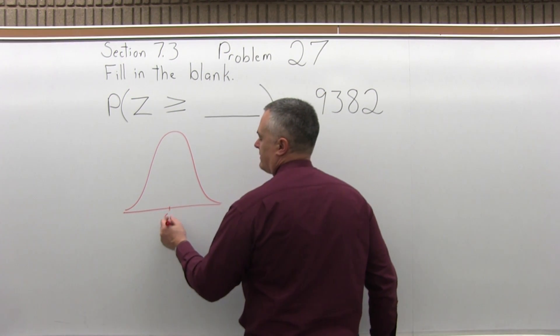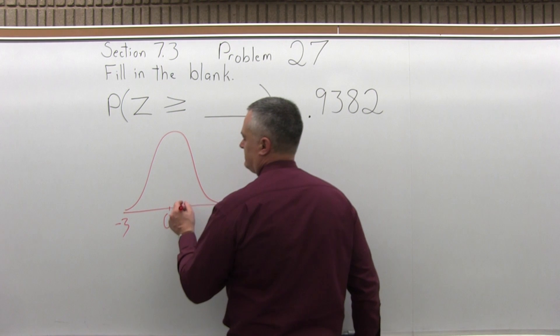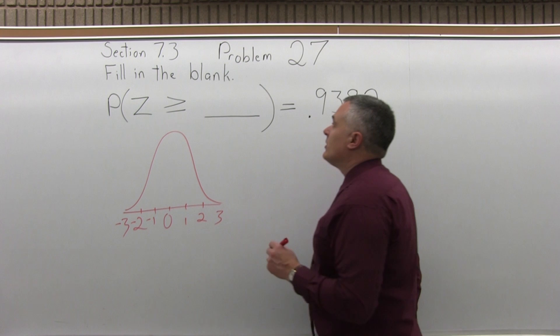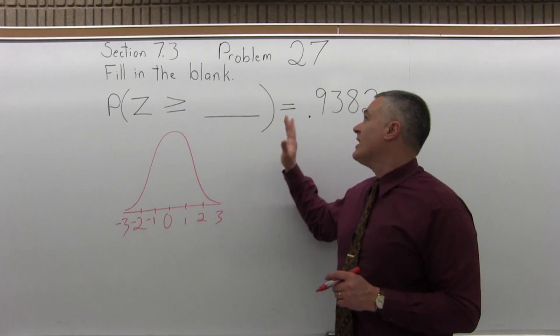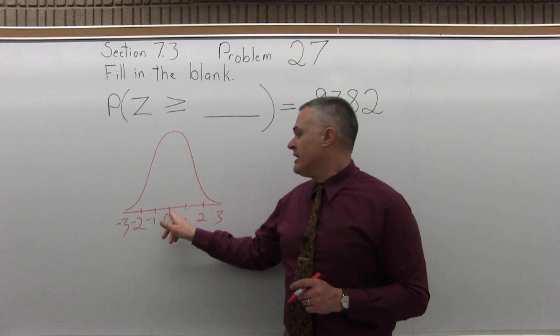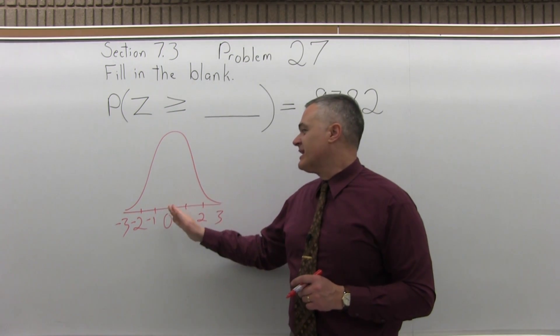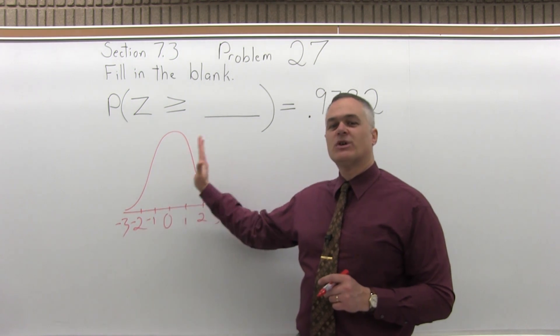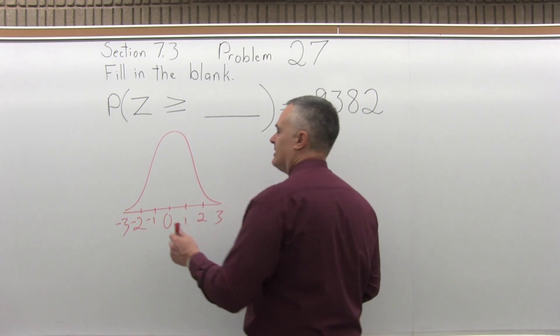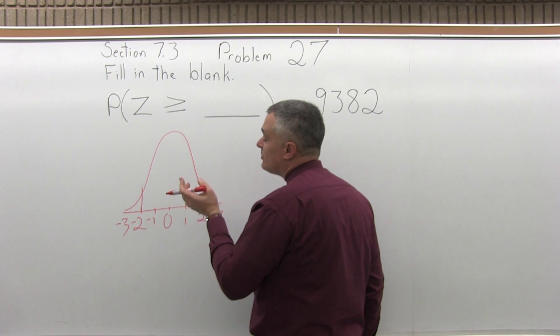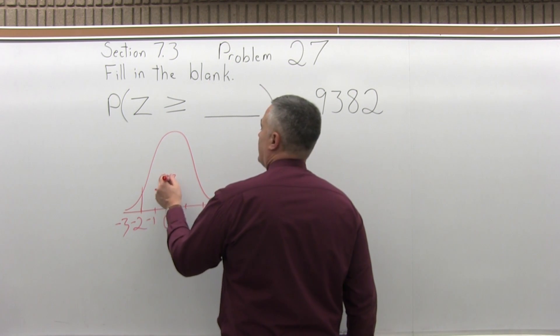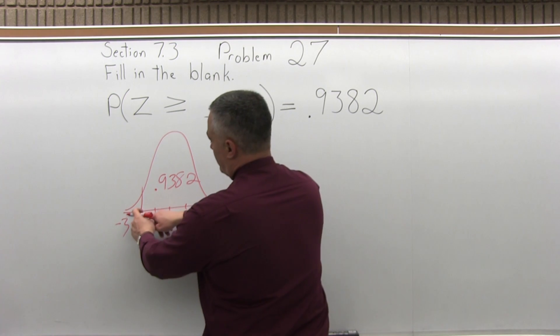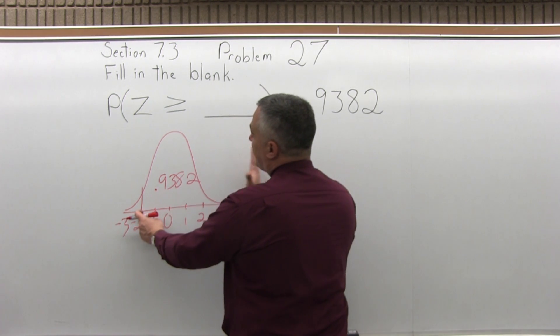So I have a bell curve. The probability that Z is greater than some value is .9382. If I start right in the middle, the probability that Z is greater than that is .5. It's got to be much further to the left to be the probability that's greater than .9 something. So I'm guessing it's going to be pretty close to the two one way or the other. So that's .9382. I know the probability that Z is greater than something here is .9382.